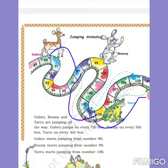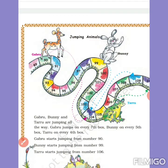Bani jumps on every 5th box. Bani is at 99 first, so the 5th box will be 104. The next 5th box for Bani will be 109. And Taru is at 106 - Taru jumps every 4 boxes, so from 106, Taru will land at 110.